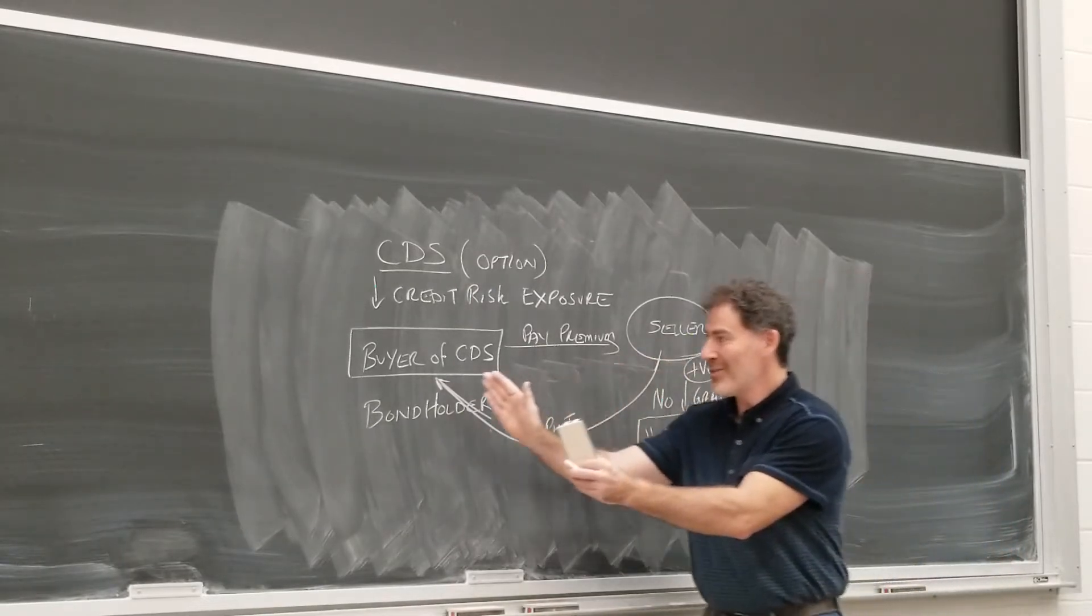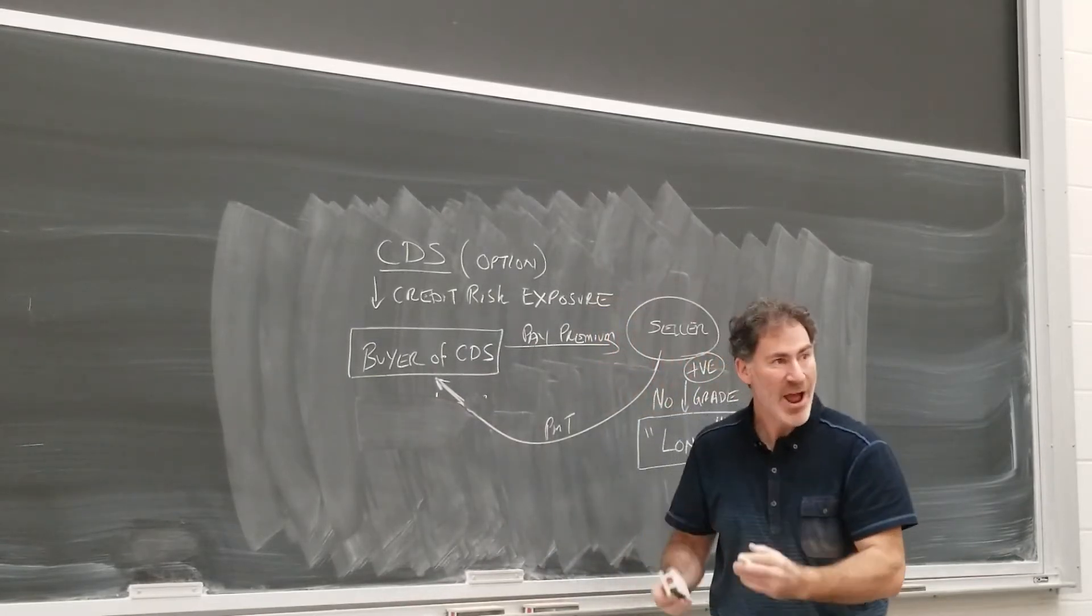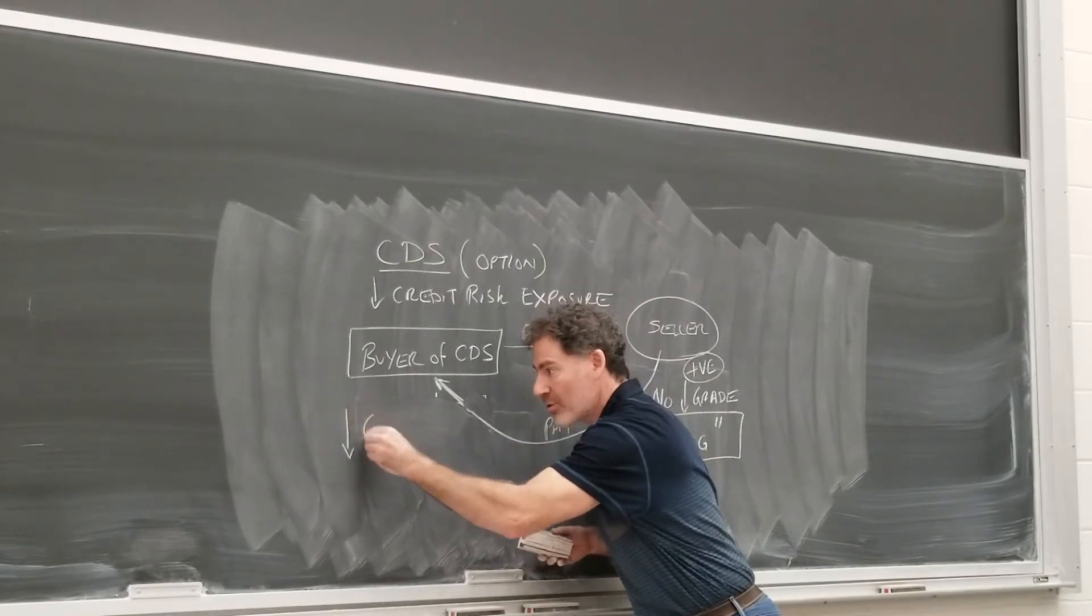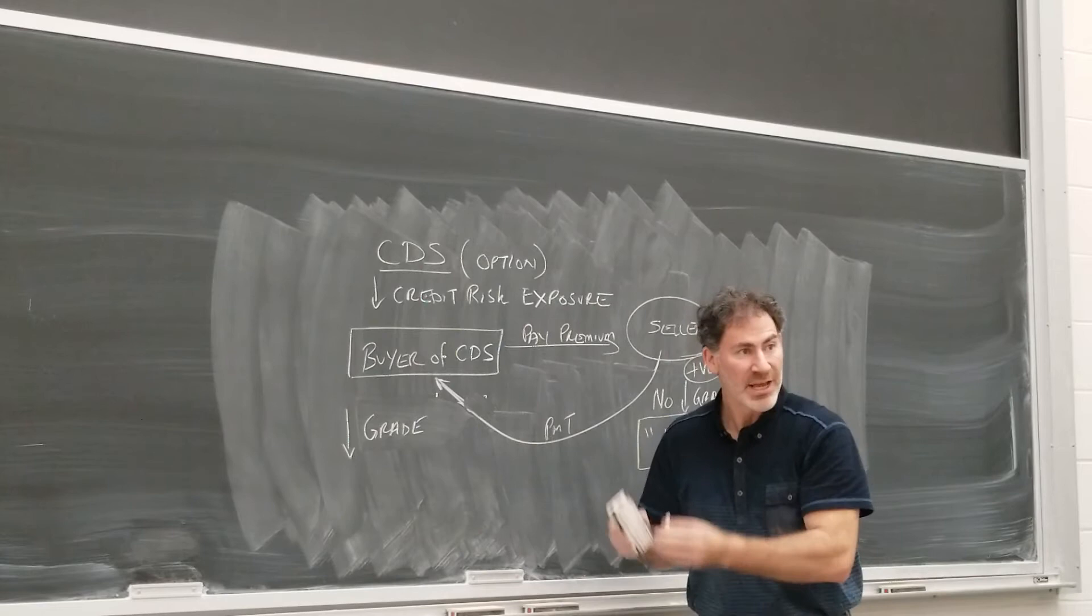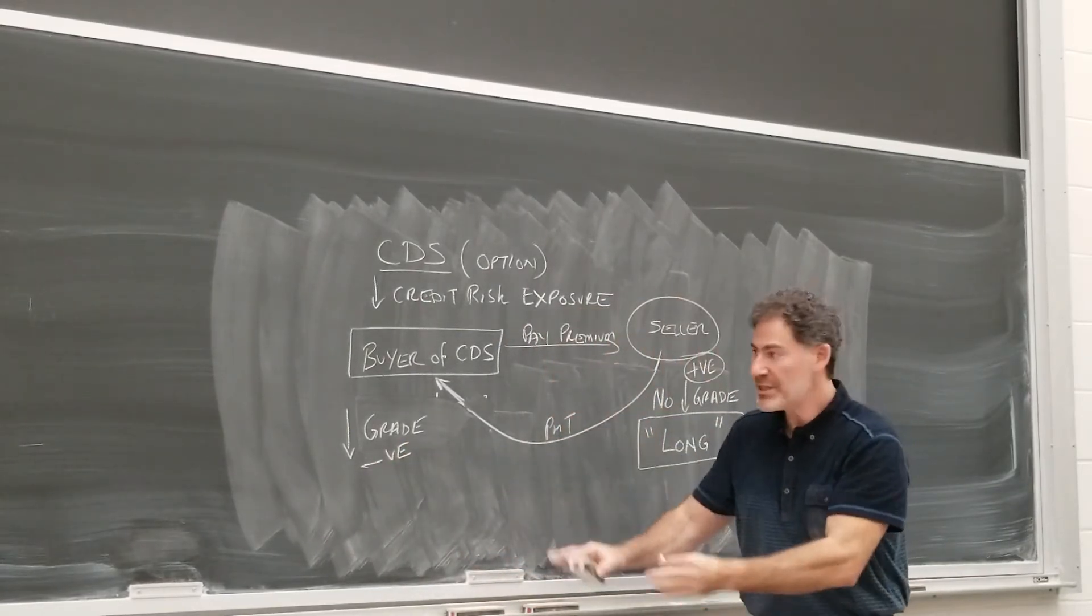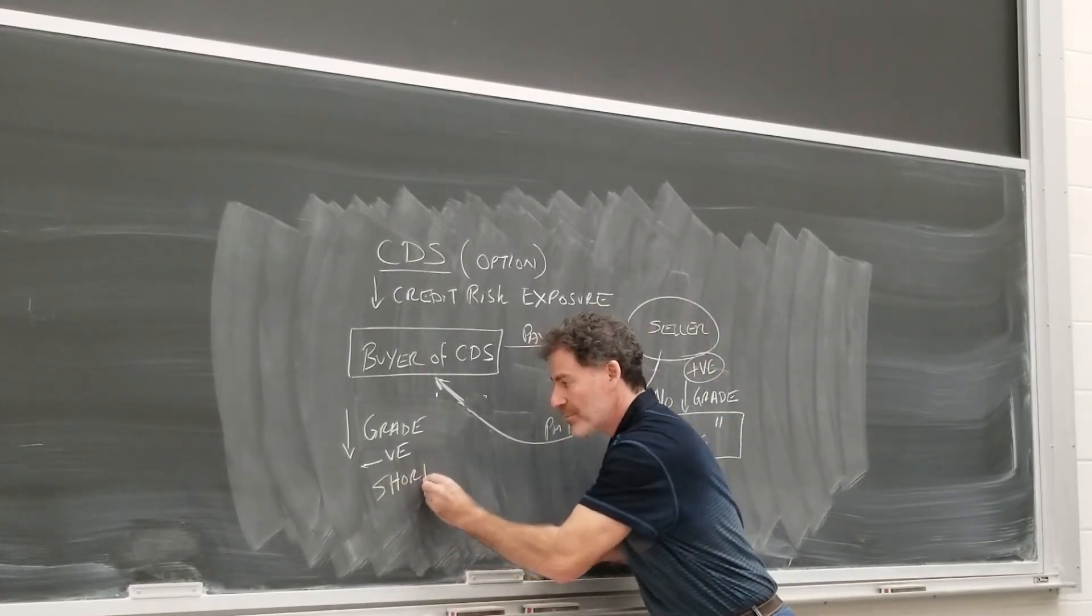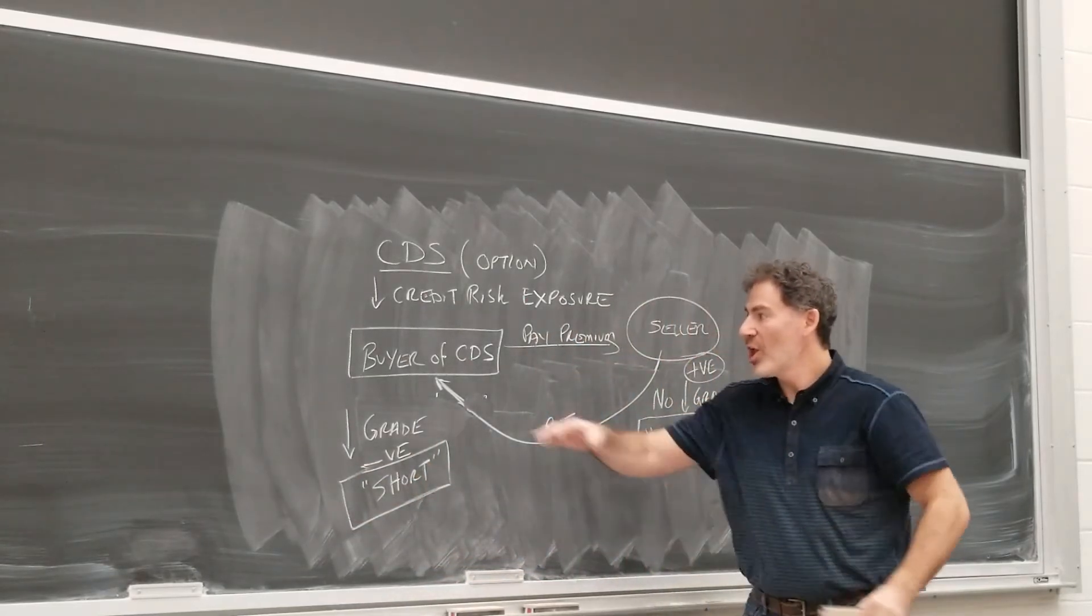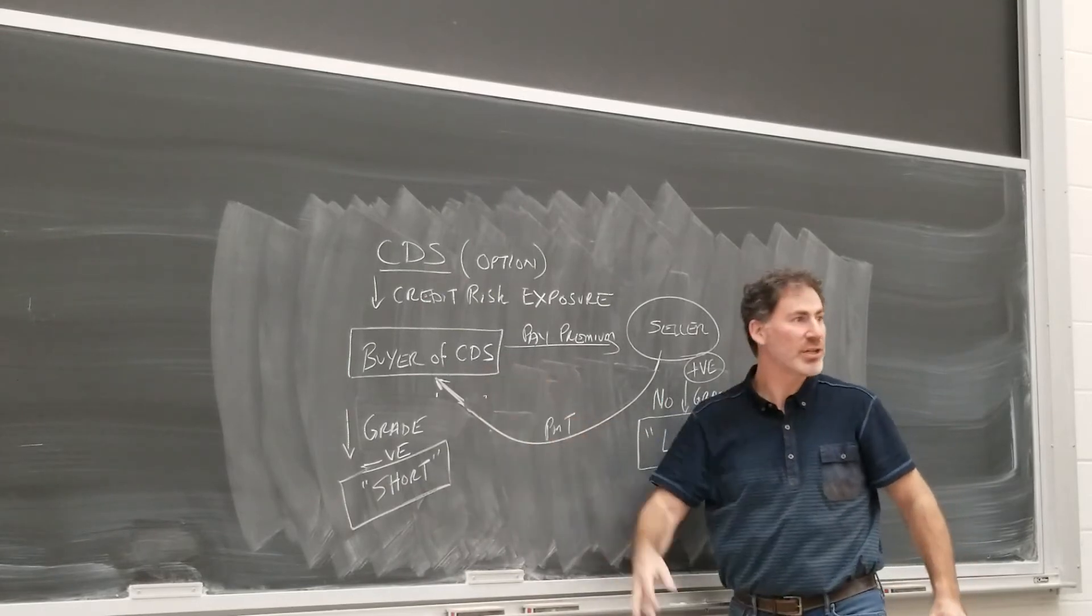Over here, the buyer of the CDS, okay, they were the bondholder. When did they get a payoff? They get a payoff if, yes, there is a downgrade, okay, if there's a credit event. If there's something negative, okay, and we associate going down or negatives with a short position. So the short side of a CDS is actually the buyer.